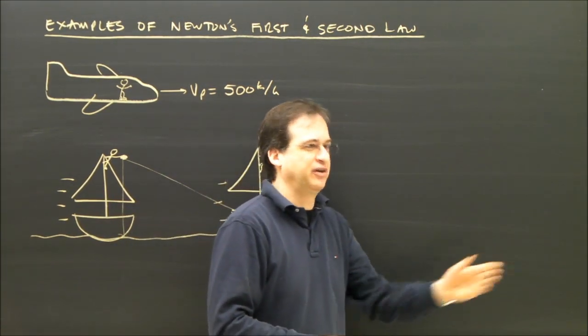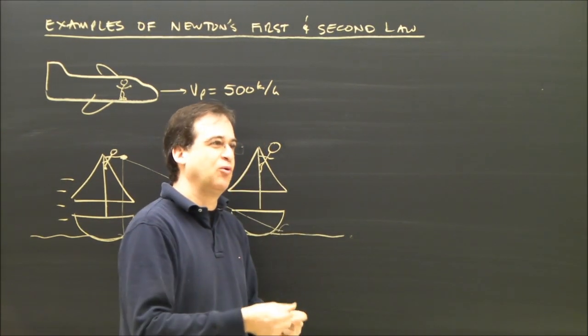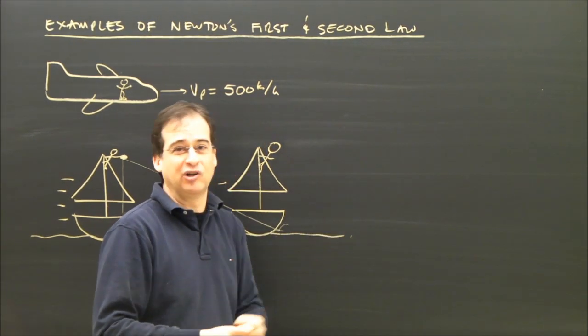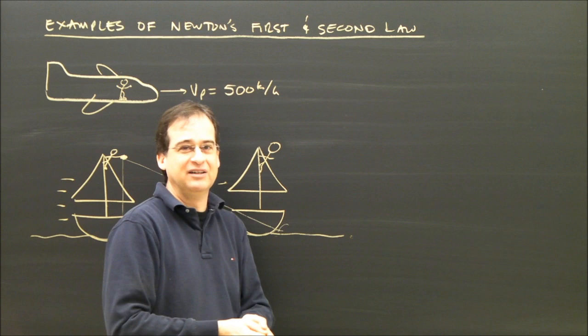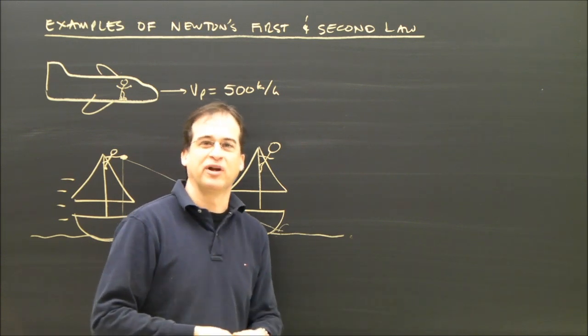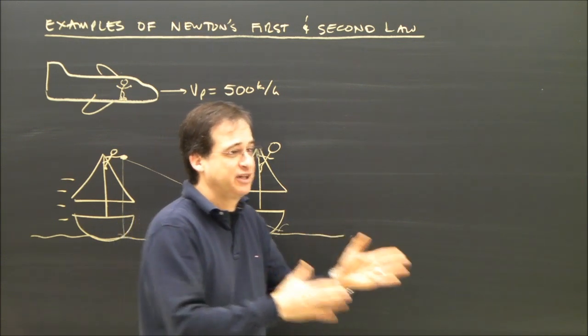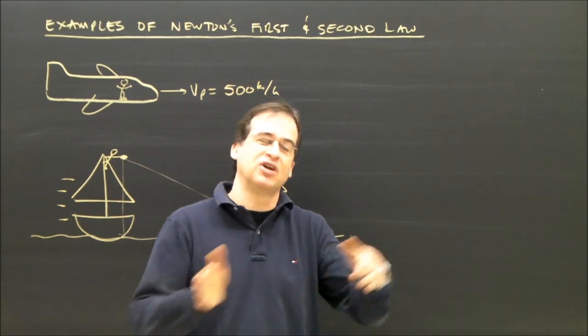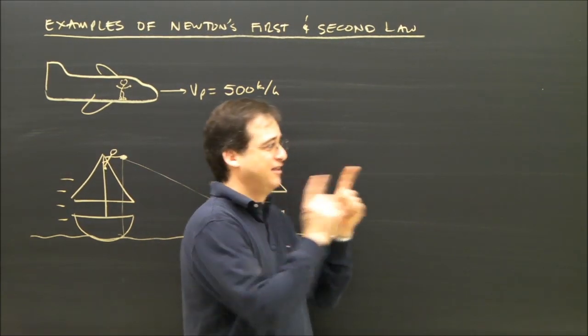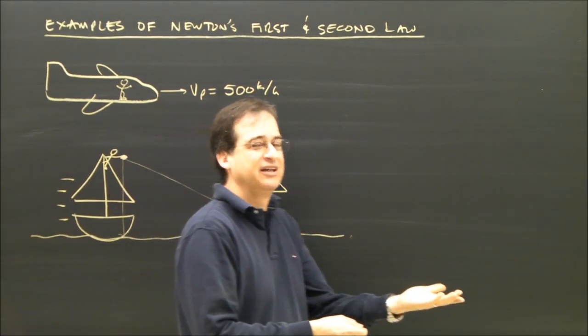Well, the car's moving forward at 100 kilometers per hour. You flip the coin up, the coin is moving forward at 100 kilometers per hour because it was in your hand. There's nothing stopping it from moving forward at 100 kilometers per hour, so it will continue. When there's no unbalanced force, objects continue doing what they're doing. If that coin was moving at 100 kilometers per hour, it'll land in your hand.